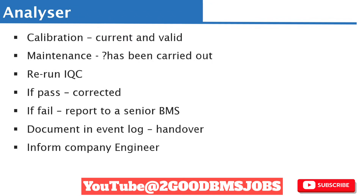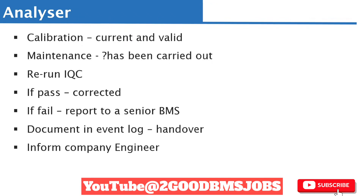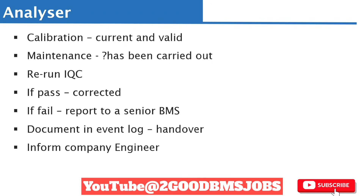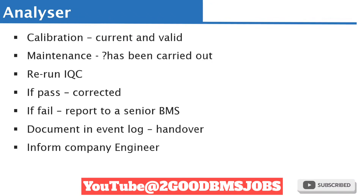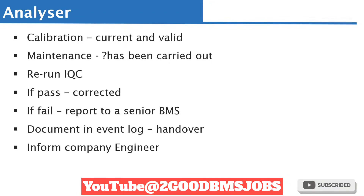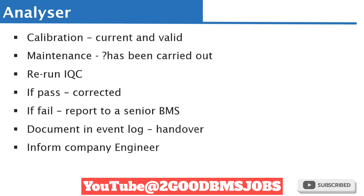After performing maintenance and calibration, you then rerun your internal quality control sample. If it passes, that means you have corrected the problem — meaning the issue was not from the quality control sample or reagent in your previous investigation. If it fell again, you may then need to report it to a senior biomedical scientist.